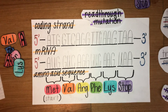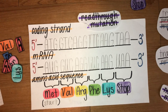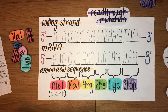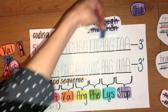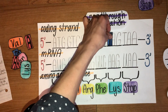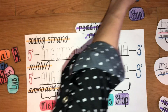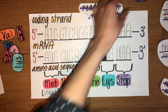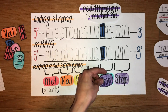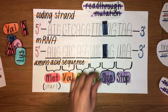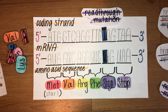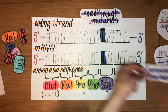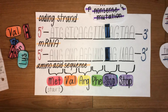Our final example is going to be in the second to last codon. This is going to be a transversion from A to T, which in the mRNA will make A to U. Looking at the respective change in the amino acid sequence, we go from a lysine amino acid to a stop codon. This is going to be a nonsense mutation because of this.